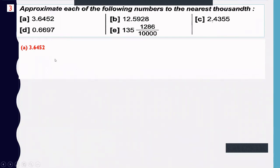Practice example — number one. Determine the digit at the thousandths place: it is 5. The next digit is 2. Since 2 is less than 5, cancel the 2 and all digits to the right — approximately 3.645.